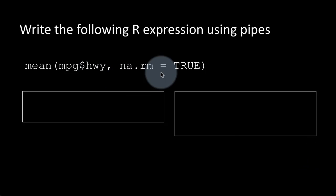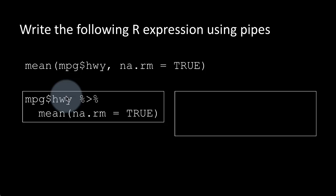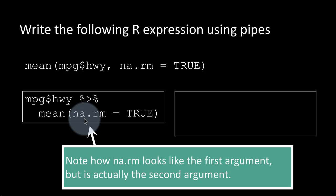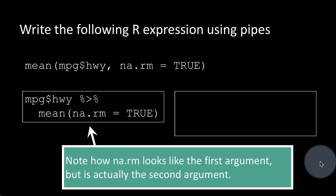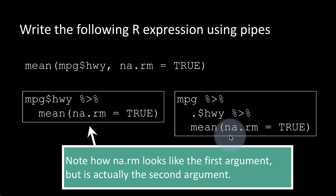Similarly, suppose we want mean(mpg$hwy, na.rm = TRUE). We can write mpg$hwy %>% mean(na.rm = TRUE). Note that na.rm looks like the first argument, but it's not — the first argument is always what's coming on the pipe, which is mpg$hwy. Alternatively, mpg %>% .$hwy %>% mean(na.rm = TRUE) achieves the same result, where mpg$hwy is the implicit first argument to mean.